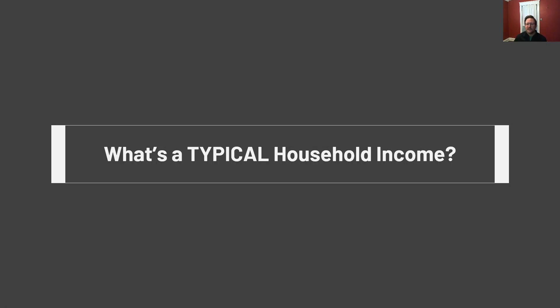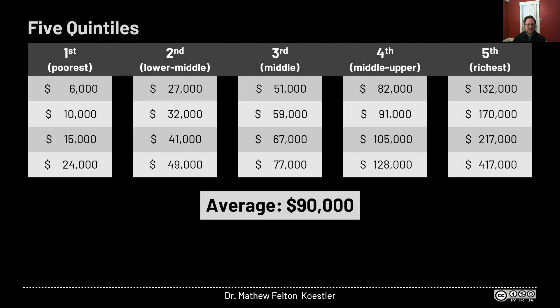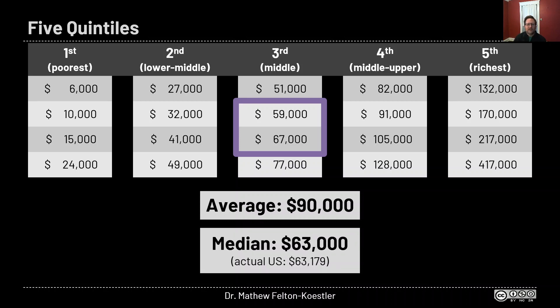The question we want to ask is: what's a typical household income? There's another way to talk about typical, which is the median. The median is simply lining the data up from least to greatest and picking the point in the middle — or if we have an even number, taking the average of the two middle data points. With our data, we take the average of the two middle households and get a median household income of sixty-three thousand dollars, which is very close to what the U.S. Census Bureau actually reports.